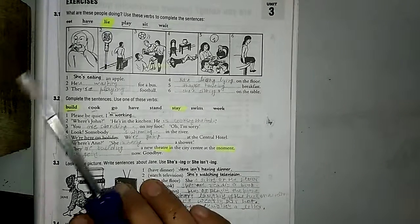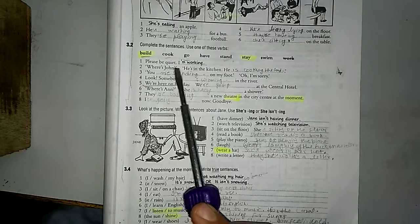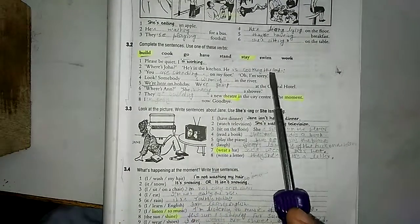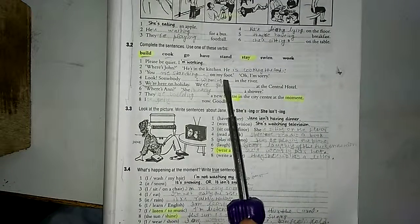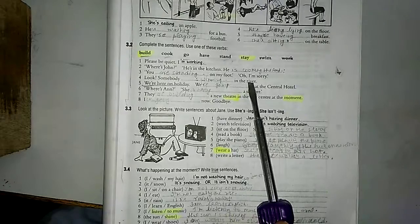Please be quiet, I am working. Where is John? He is in the kitchen. He is cooking the food. You are standing on my foot. I am sorry. Somebody is swimming in the river.